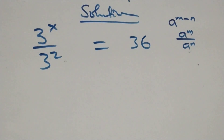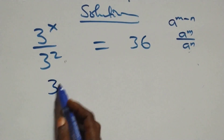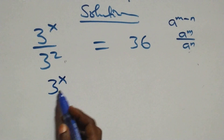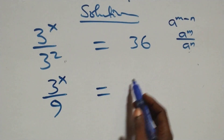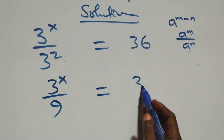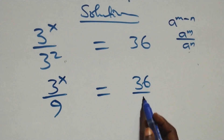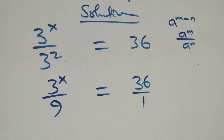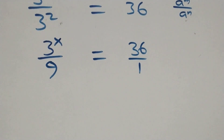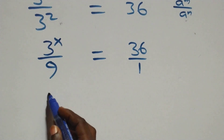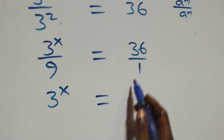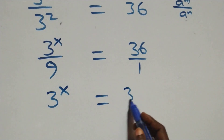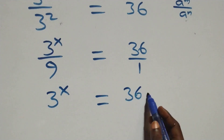The next step, we can express this as 3 raised to power x over 3 squared. Three times three is nine, so this equals 36 over 1. We then cross-multiply: 3 raised to power x times 1 — same as 3 raised to power x — equals 36 times 9.